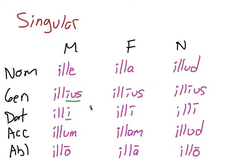So ille, illa, illud, illius, illius, illius, illi, illi, illi, illum, illam, illud, and illo, illa, illo. Those are the singular forms.